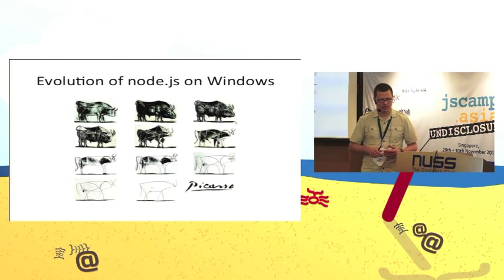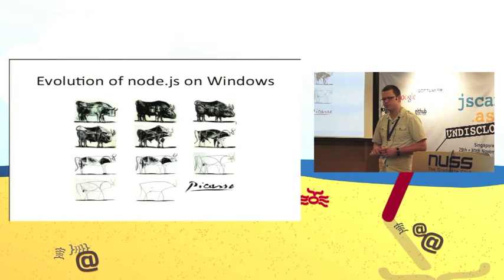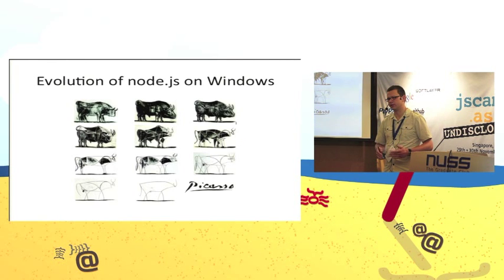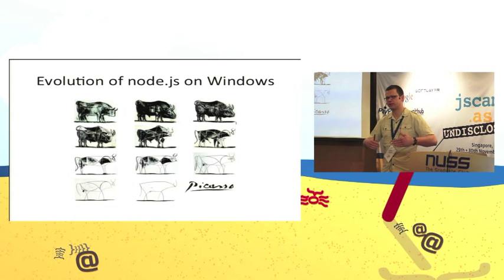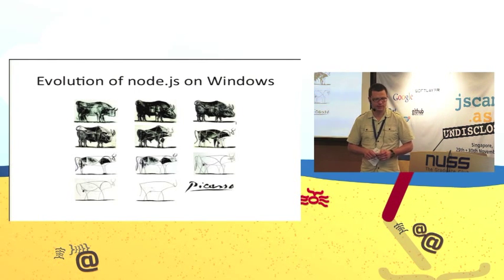Back when the project started in 2009, it was primarily targeting the Unix platform and Mac. There was an implementation for Windows that was using Cygwin as a simulation layer of the POSIX environment, and from there the stack built up functionality just as it would on Linux. Needless to say, that implementation was pretty slow and inefficient.